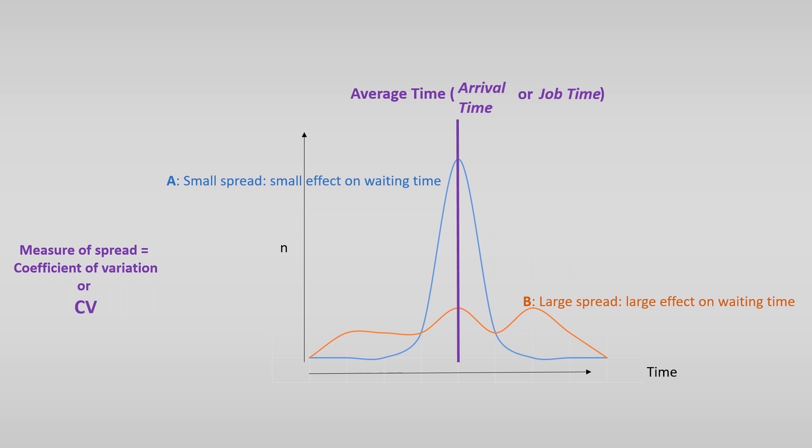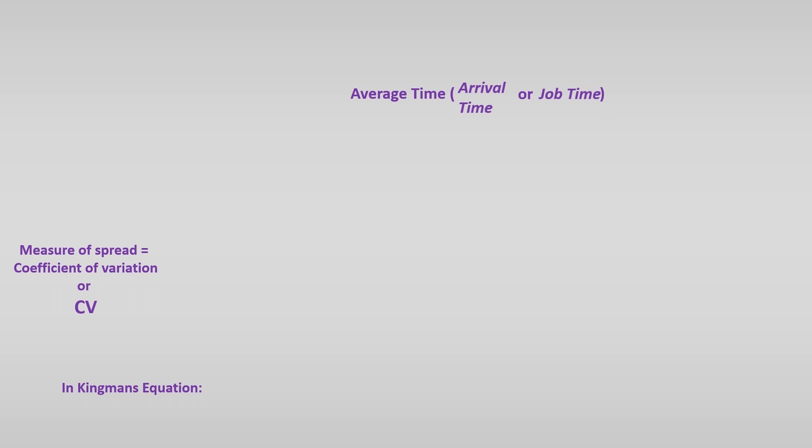In Kingman's equation we use CV for the arrivals and CV for the job. The effect can be described best by the sum of the square of the CV of arrival and the square of the CV of the job time divided by 2.